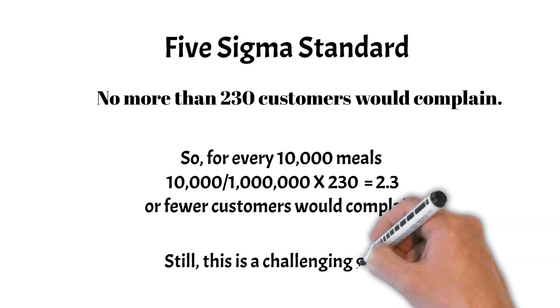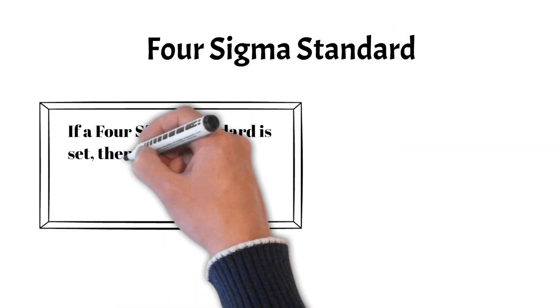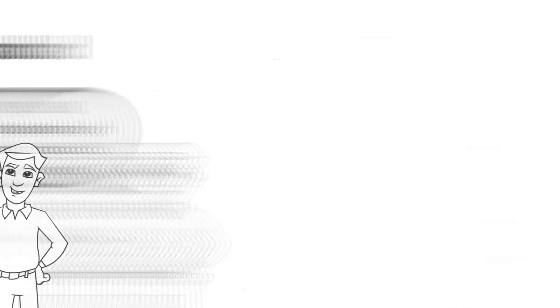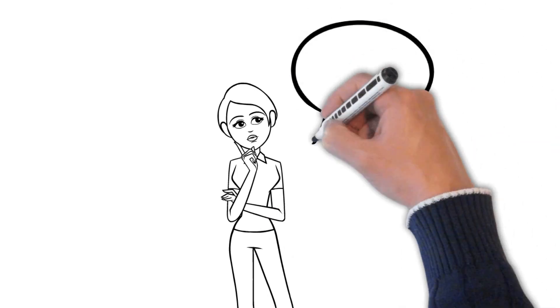Still, this is a challenging goal. Even a 4 Sigma standard would mean fewer than 62 complaints for every 10,000 meals. So, where should the standard be set?